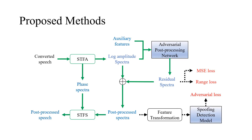As for the training loss, MSE loss and range loss constrain the residue spectra to ensure subjective performance. The adversarial loss is calculated by the pre-trained spoofing detection model with detection features transformed from the post-processed spectra. By reducing the adversarial loss, the ability of converted speech to evade spoofing detection is improved.